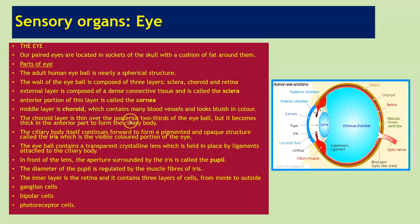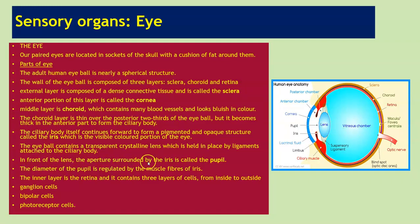The choroid layer is thin over the posterior two-thirds of the eyeball, but becomes thick in the anterior part to form the ciliary body. The ciliary body continues forward to form a pigmented and opaque structure called the iris — the visible coloured portion of the eye. The eyeball contains a transparent crystalline lens held in place by ligaments attached to the ciliary body. In front of the lens, the aperture surrounded by the iris is called the pupil, whose diameter is regulated by the muscle fibres of the iris.